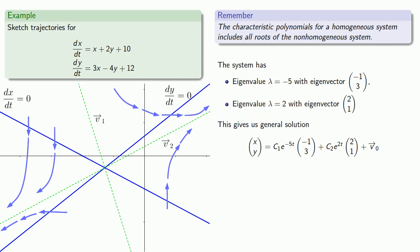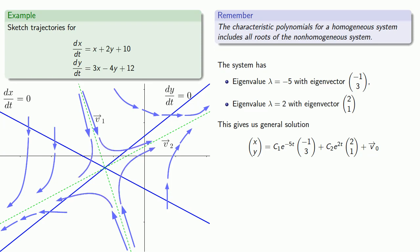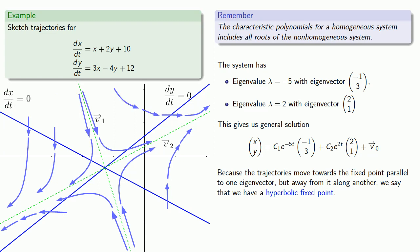What if we actually start a trajectory close to this eigenvector v1? So remember the component of the solution that's going to be parallel to the vector (-1, 3), that first eigenvector, is going to go to zero. So we're going to close in on the fixed point. However, as we do that, remember this component is going to go to infinity, so this component is going to get larger and larger. So we close in on the fixed point along v1, but we move away from it parallel to v2. So our trajectories will look something like this. Because the trajectories move towards the fixed point parallel to one eigenvector, but away from it along another, we say that we have a hyperbolic fixed point.